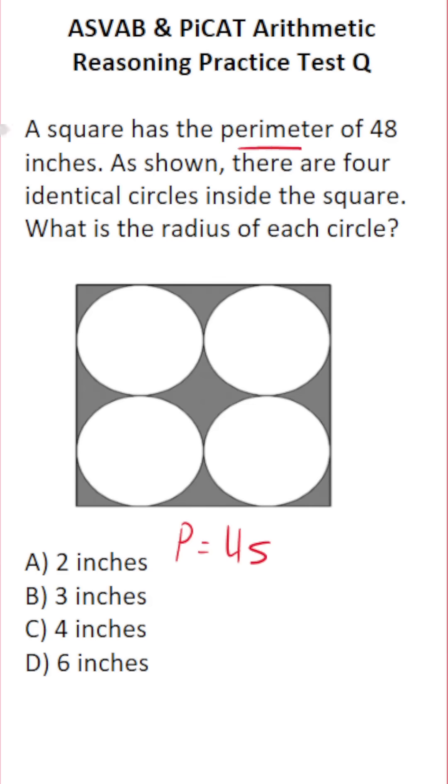In this case, we know its perimeter, P, is 48. So let's plug that in for P down here. And we can actually solve for S, the side length of the square, by dividing both sides by 4.